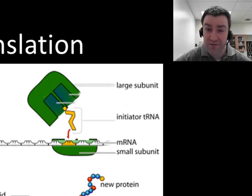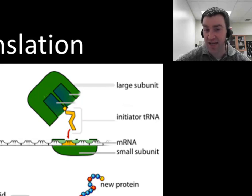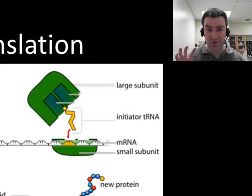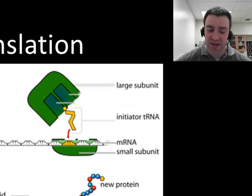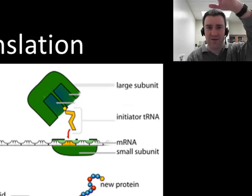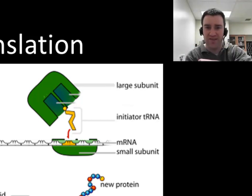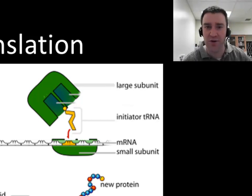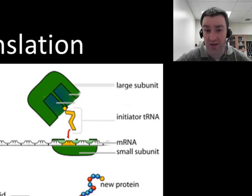A very brief note: prokaryotes can do transcription and translation simultaneously. Since they don't have a nucleus, those steps are really taking place in the cytoplasm. Sometimes an RNA polymerase cannot even be finished copying the gene when behind it a ribosome is already clamped onto the message and is starting to build the protein. That can't happen in eukaryotes because the nucleus separates the two steps.